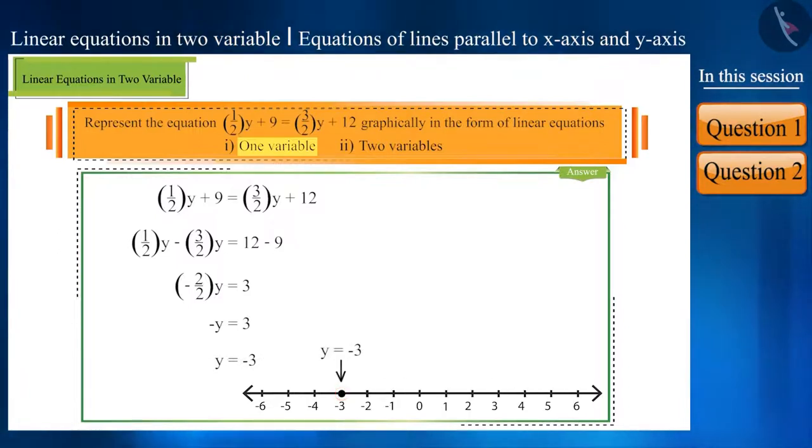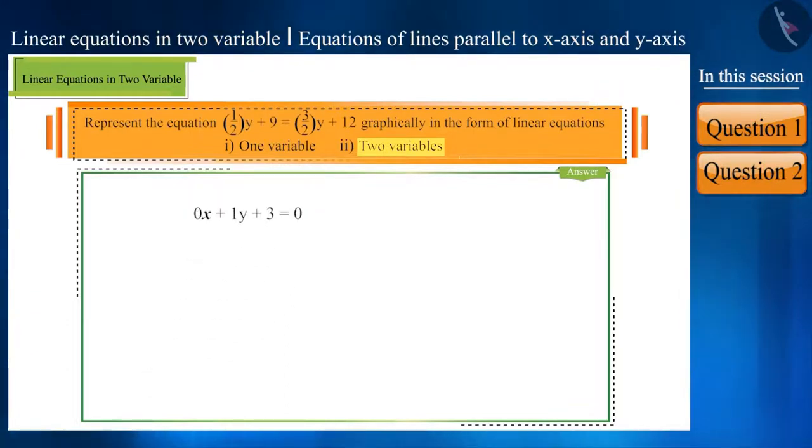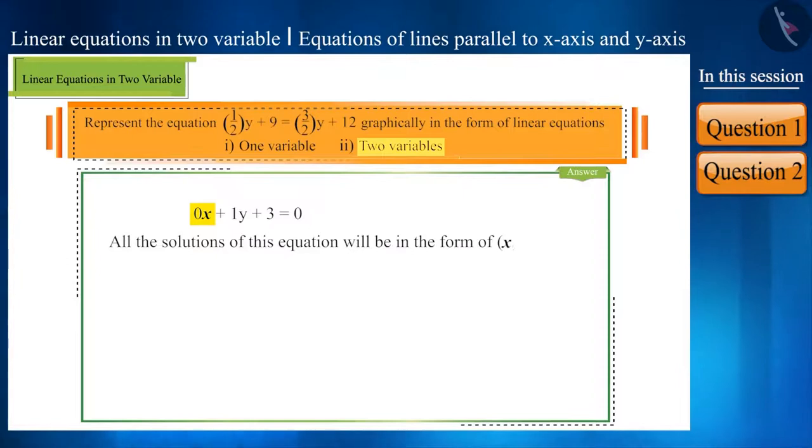We have not yet solved this question completely. We now have to represent it in the form of linear equations in two variables and it will be 0x plus 1y plus 3 is equal to 0. Observe this equation. Here, if we take any value for x, it will ultimately be 0. All the solutions of this equation will be in the form of x minus 3 where x is a real number.